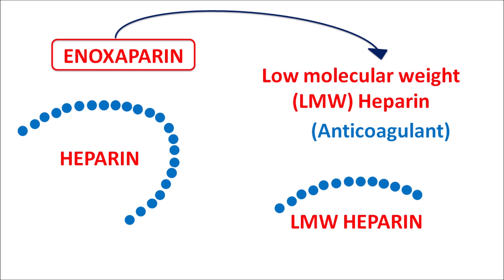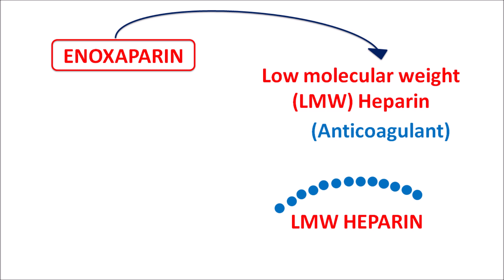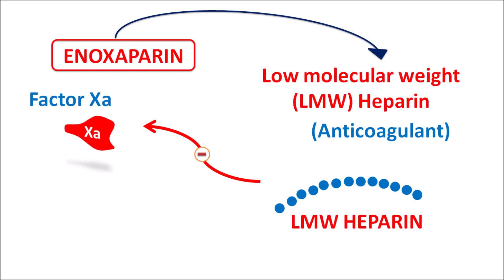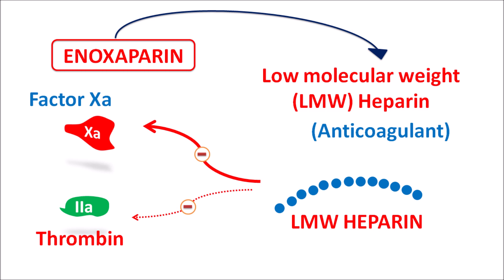Enoxaparin is preferred over natural heparin. Being a low molecular weight heparin, enoxaparin mainly inhibits the activity of Factor 10a, but has very little activity on Factor 2a. Factor 2a, also called thrombin, is involved in the final steps of the clotting pathway, while Factor 10a is common to both the extrinsic and intrinsic pathways.